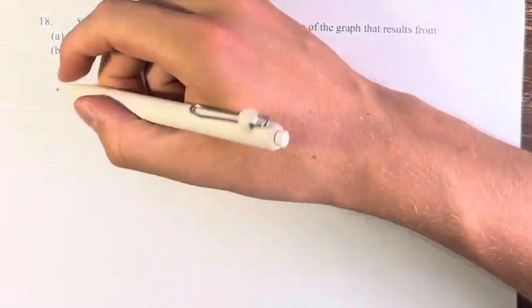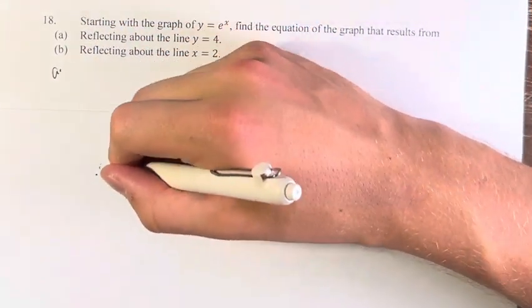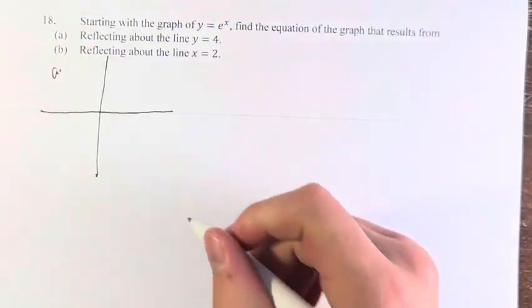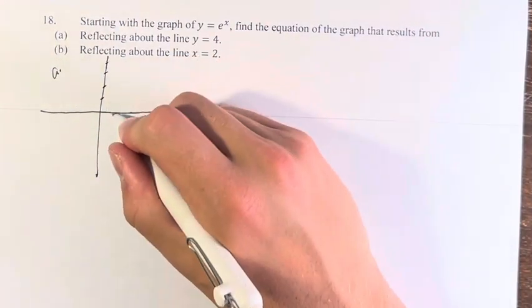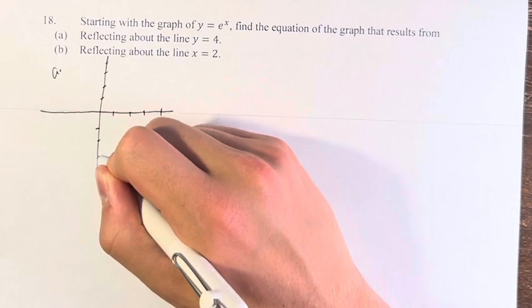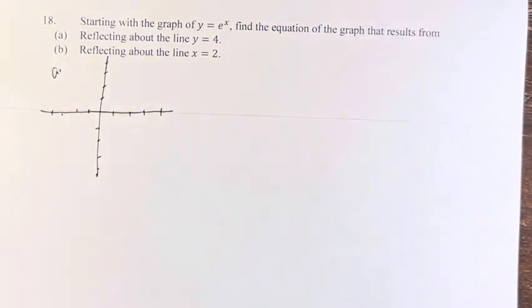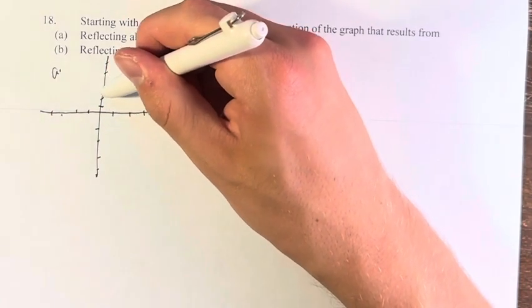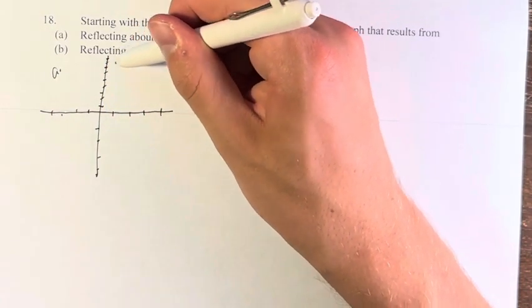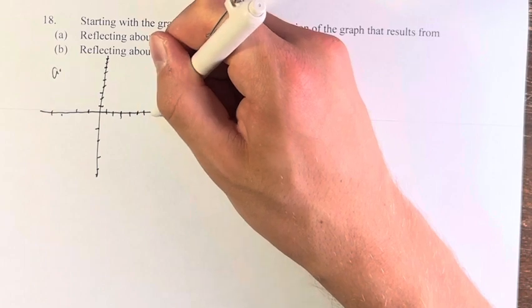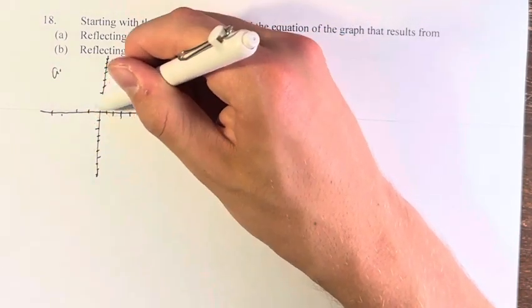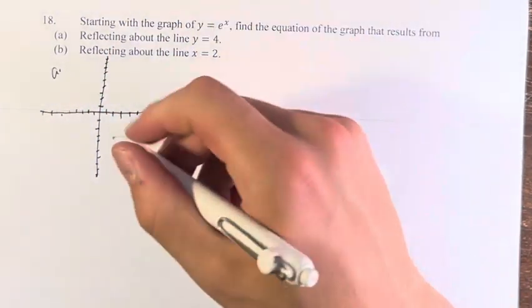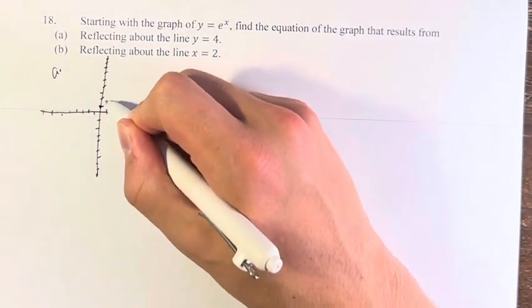So starting first with a, let's actually draw the graph of y equals e to the x. So just drawing in our axes here, we have two important points, right? Actually, we're going to need more points in this. I have to double, actually, to fit onto the page. You'll see why.